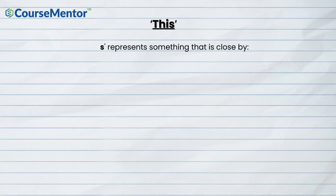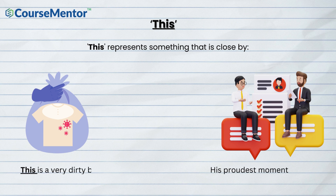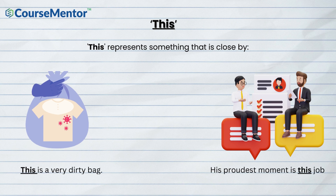'This' represents something that is close by. Example: 'This is a very dirty bag.' Another example: 'His proudest moment is this job.'